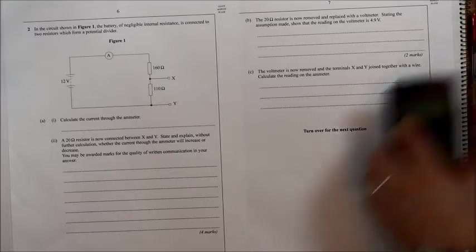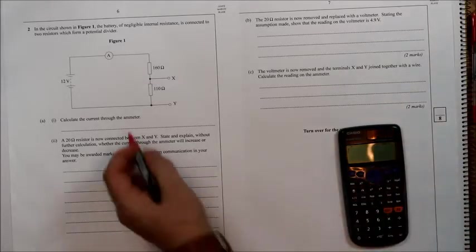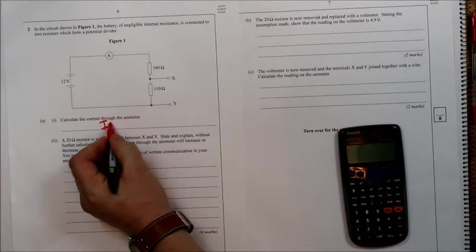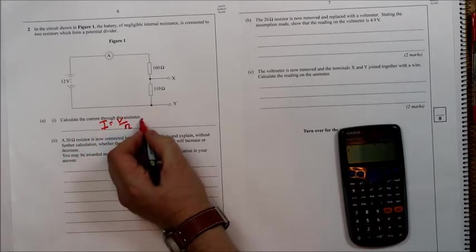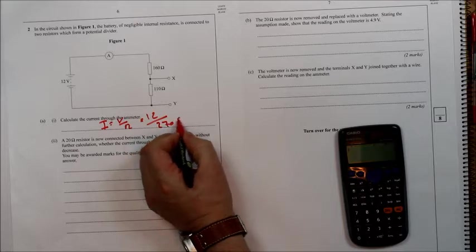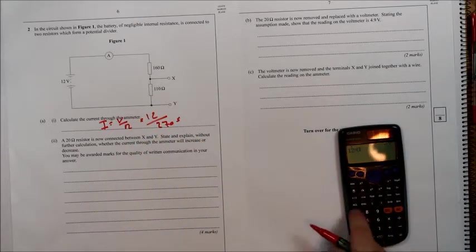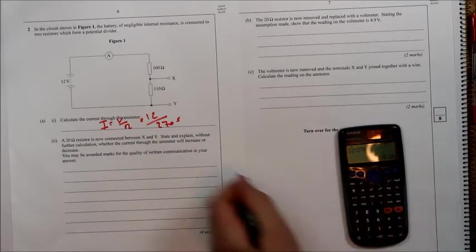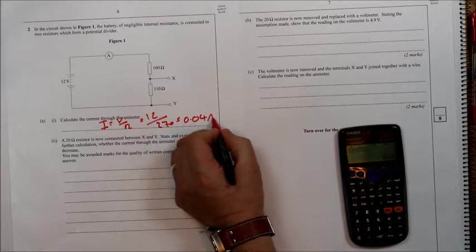So this is very straightforward. I is V over R, which is 12 over 270, which is 0.04 amps.